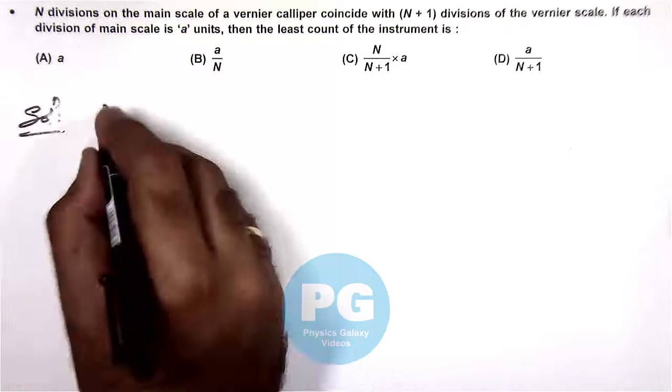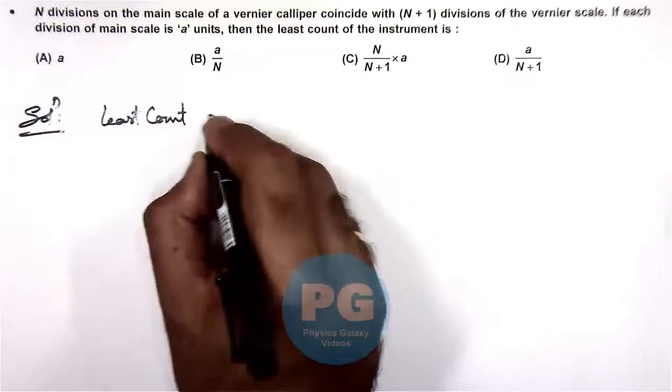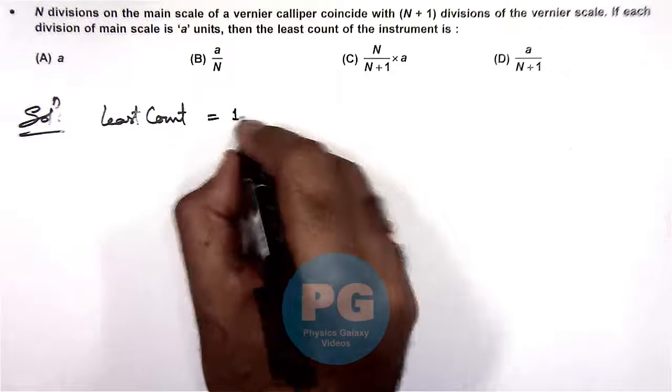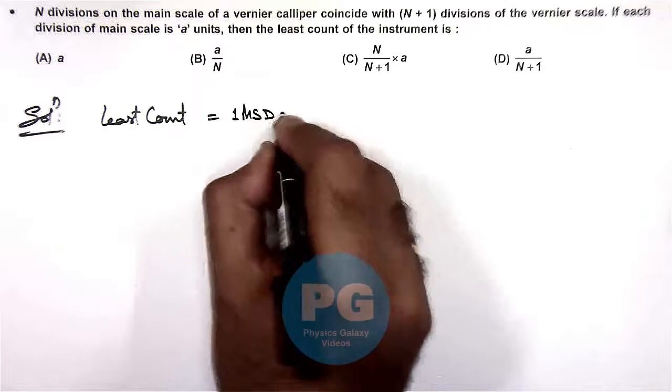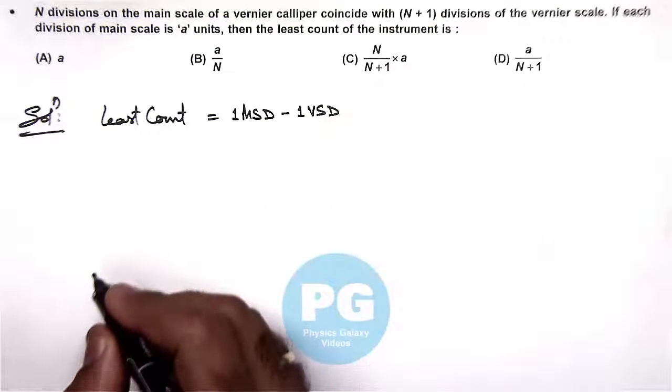We already discussed in theory that least count is given as 1 main scale division minus 1 vernier scale division. This is the way how we calculate the least count.